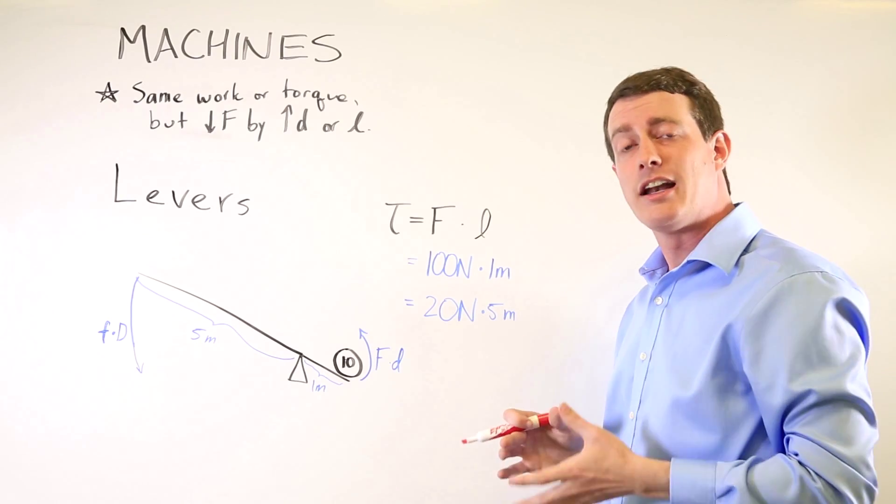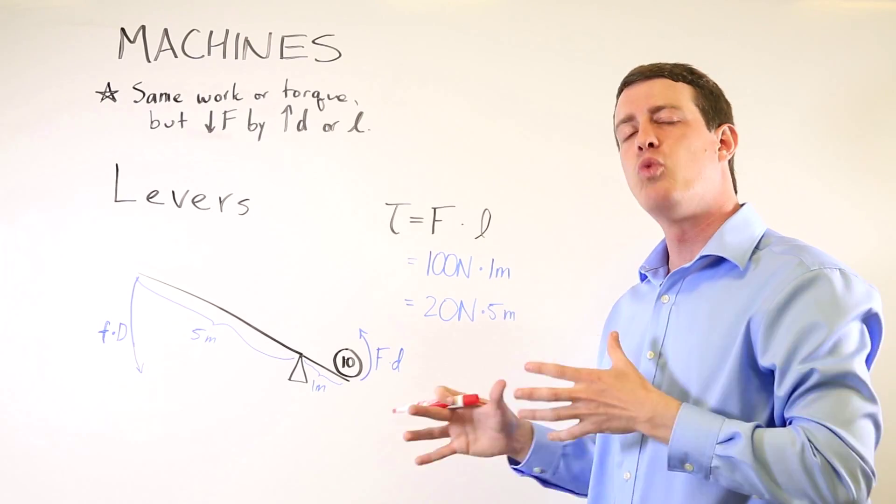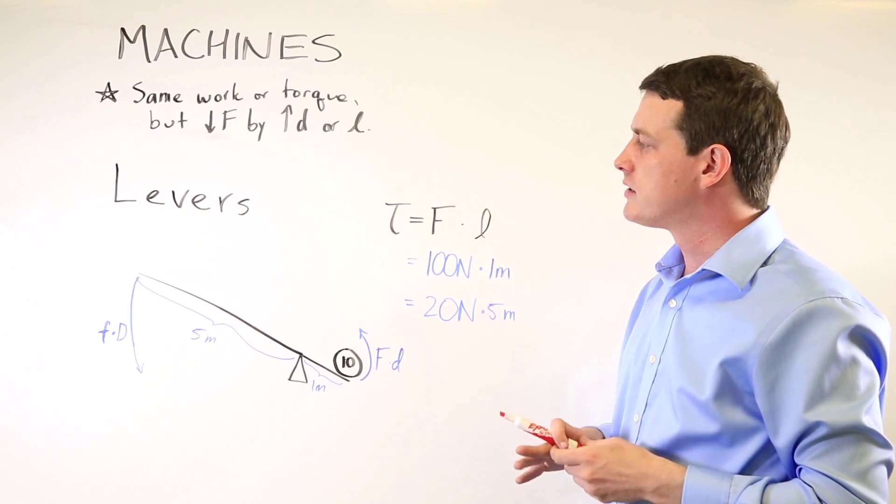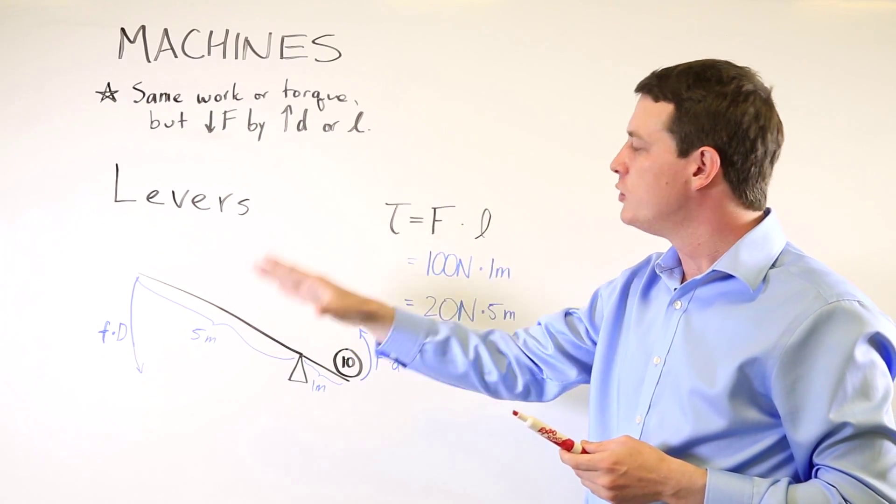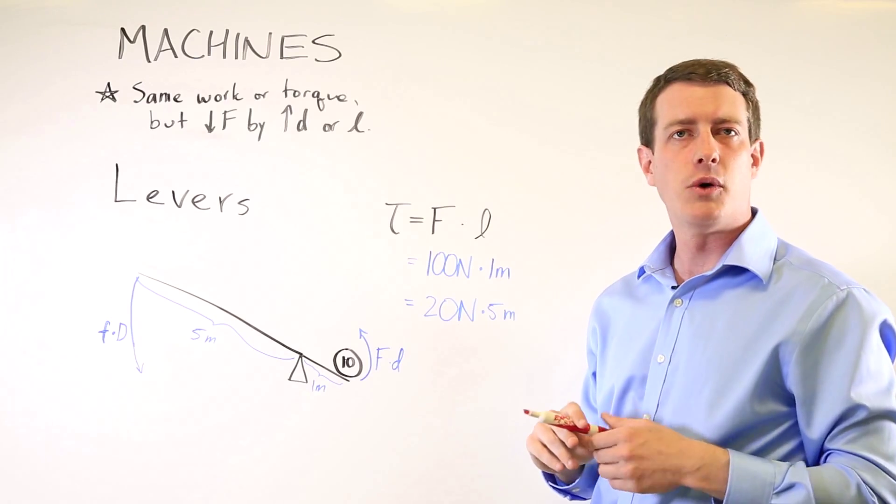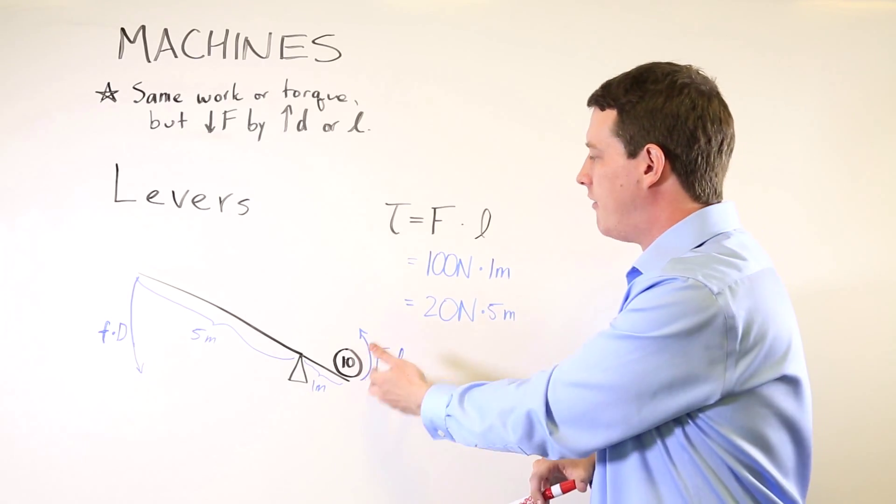And so that confers you a mechanical advantage, a five to one mechanical advantage, because you have the longer lever arm and thus the 20 newton force that you're applying is going to have an output force of 100 newtons.